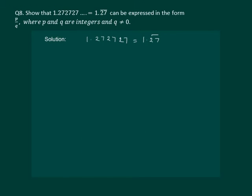Let us read the question. Show that 1.272727, which is equal to 1.27 bar, can be expressed in the form p by q where p and q are integers and q is not equal to 0. So our first step will be to assume that let x is equal to 1.2727 and so on.